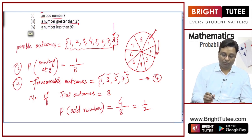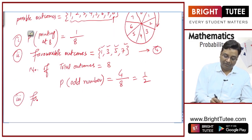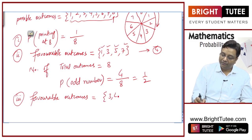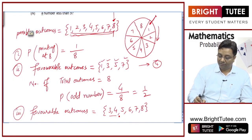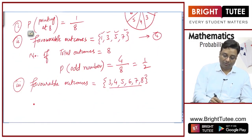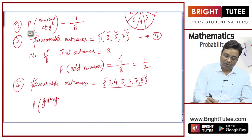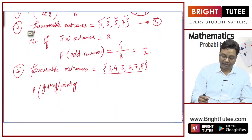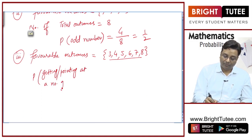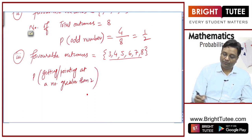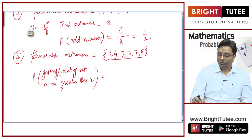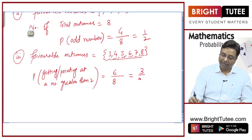What is the probability the arrow points at a number greater than 2? The favorable outcomes are 3, 4, 5, 6, 7, and 8 — that is 6 favorable outcomes out of 8 total. So the probability is 6/8, which equals 3/4.